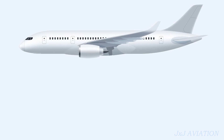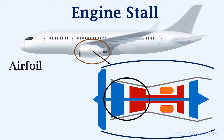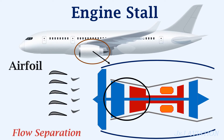To understand what an engine stall is, let's take a closer look at a turbofan engine. An engine stall occurs due to an air flow disruption in the compressor stages of the engine. The compressor stages consist of a series of airfoil-shaped blades. Because of the flow disruption, the flow will separate from these blades, which will cause the engine to stall.